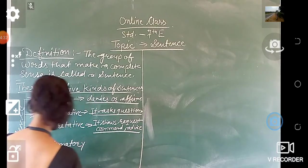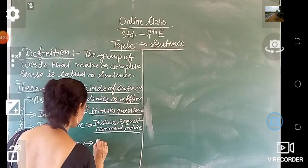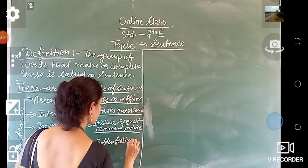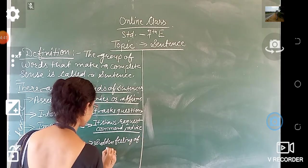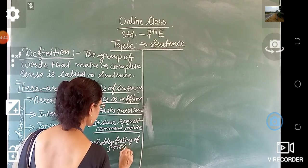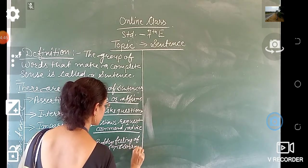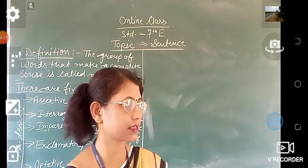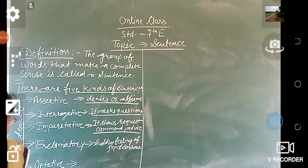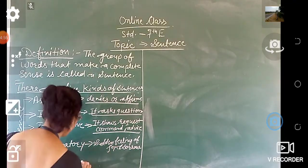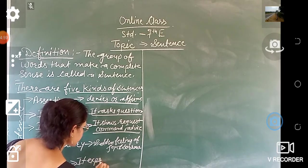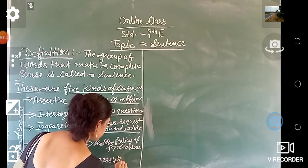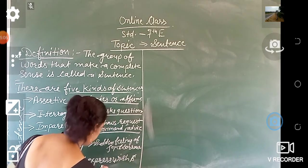What is exclamatory? It shows a sudden feeling of joy and sorrow. And the last one is optative. The optative sentence expresses wish and prayer.